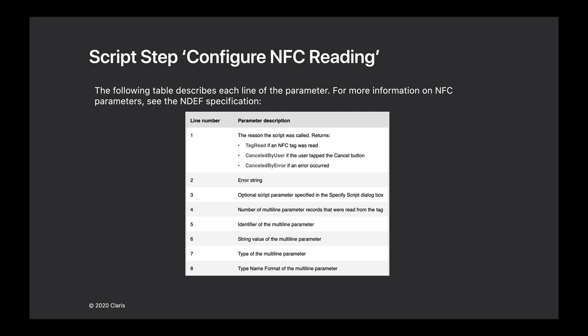The information you get back is based on the NDEF specification. You will get eight lines of information back. The first one is the reason why the script was called — you can have three options. There's an NDEF record string, and then the lines will give you the information fed from the tag. Depending on what is on the tag, you could get a URL, a business card, text, a phone number, and more. A line record will give you the type and the ID, and line eight will give you the format.